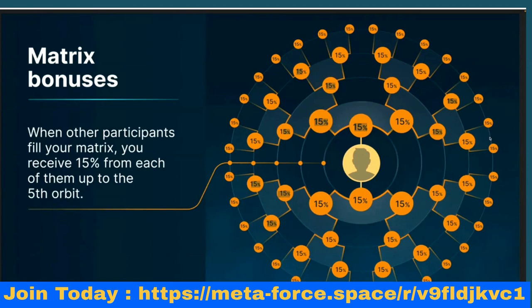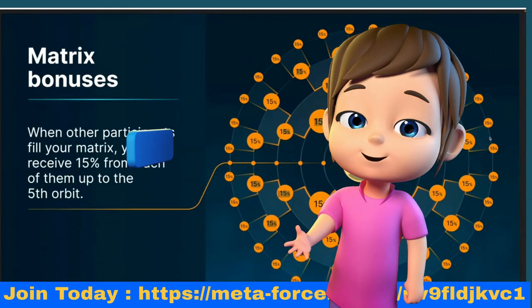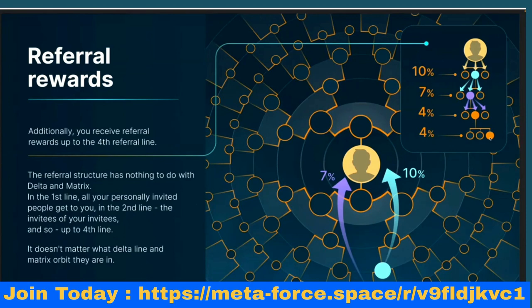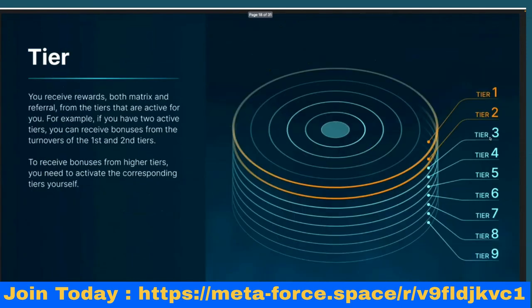Matrix bonuses represent 100% distributed to matrix participants. When other participants fill your matrix, you receive 15% from each of them up to the fifth orbit. You receive this 15% regardless of whether positions are filled by your team or by spillovers. There is also 25% distributed as direct referral rewards across four lines. The referral structure is separate from the delta matrix — in the first line all your personally invited people apply, and in the second line the invitees of your invitees, and so on.